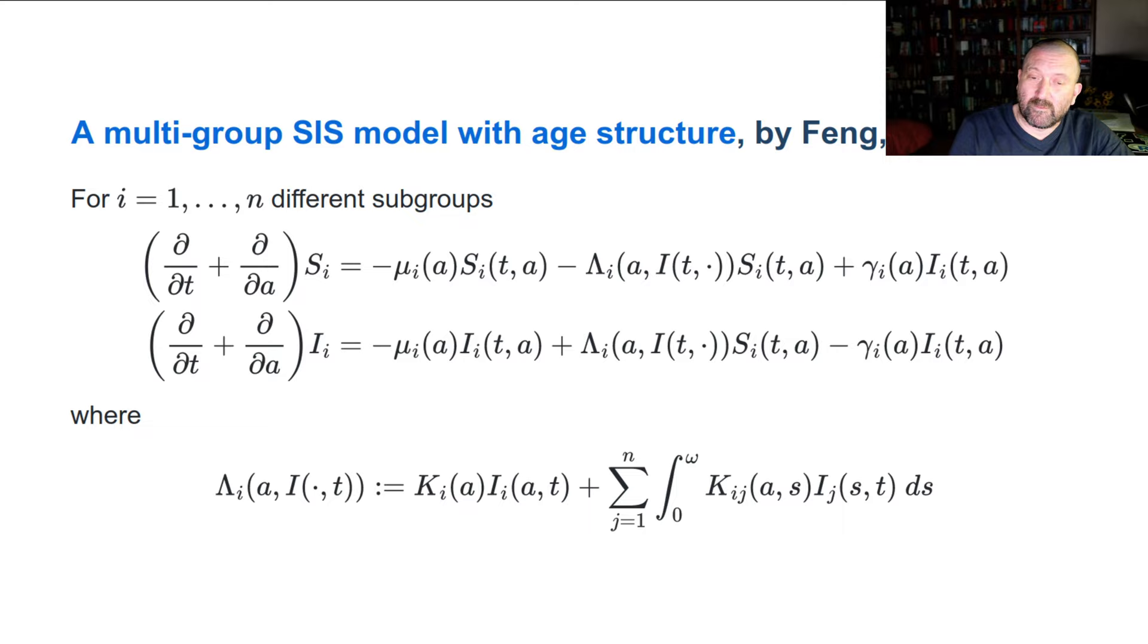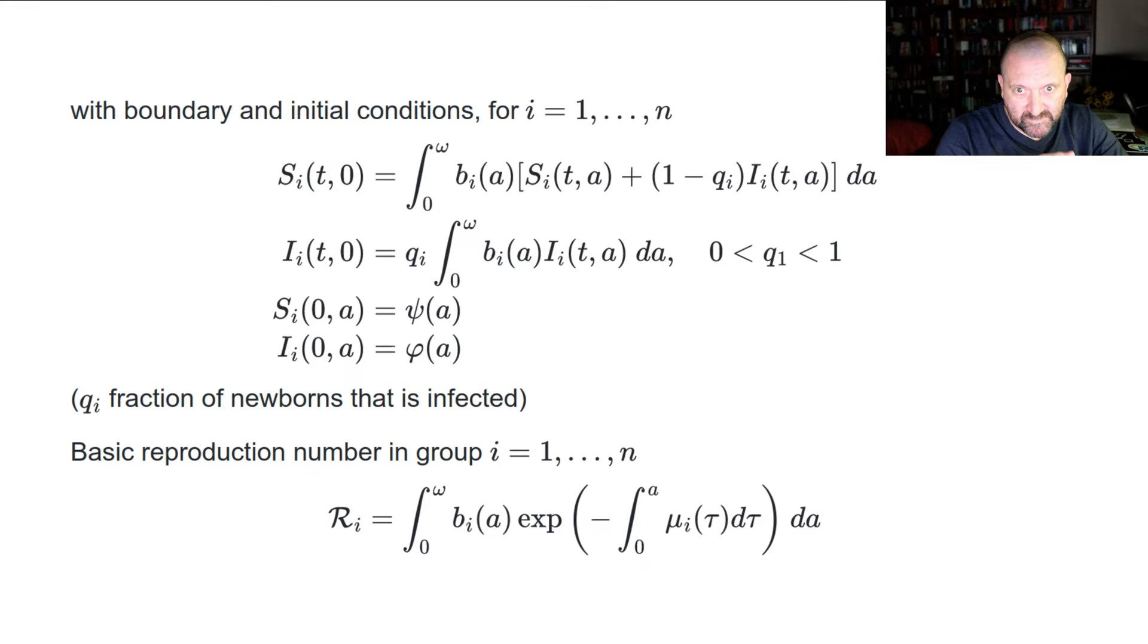This is how individuals of age A get infected. They get infected by computing this kernel of infection of individuals of group I and age. We also need to sum the contribution of individuals in all other groups because this is a multi-group model. If you're in group one, you might be infected by groups two to whatever n. As always, with a partial differential equation, you need both boundary and initial conditions. Initial conditions simply say that at time zero, there's a certain distribution of individuals of ages throughout the S and I variables.